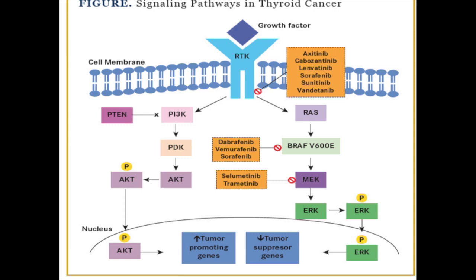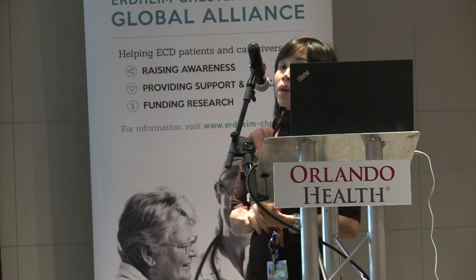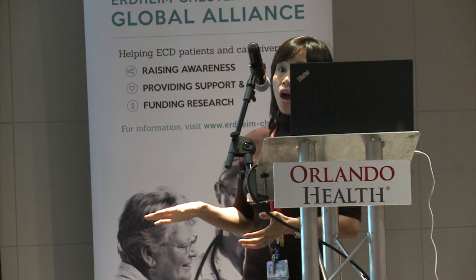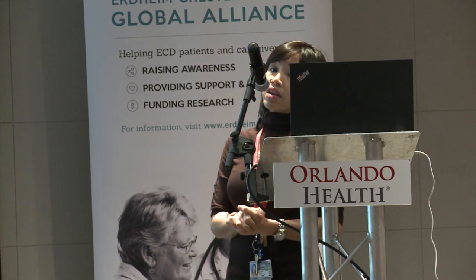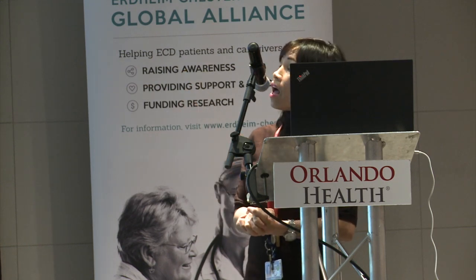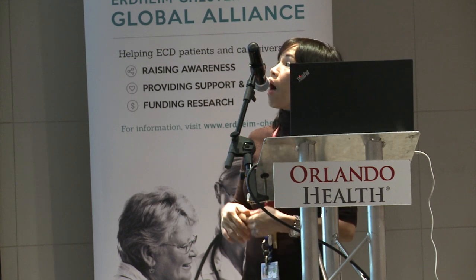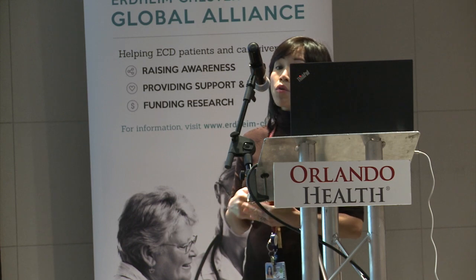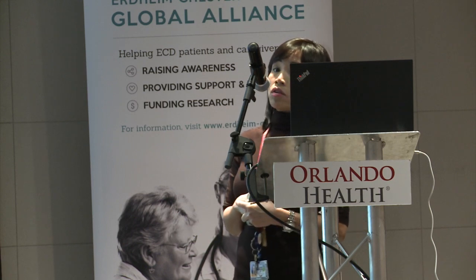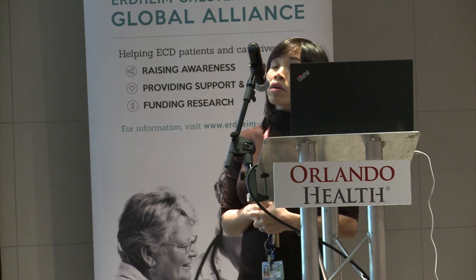Normally, in a healthy person, there is a tumor suppressor gene that acts as a check and balance — when the process is sufficient, that gene activates and the process stops. In cancer, especially in ECD, melanoma, thyroid, and lung cancer, a mutation at the BRAF or MEK pathway causes continuous signaling for growth. By using a BRAF inhibitor or MEK inhibitor, you stop that process from happening.